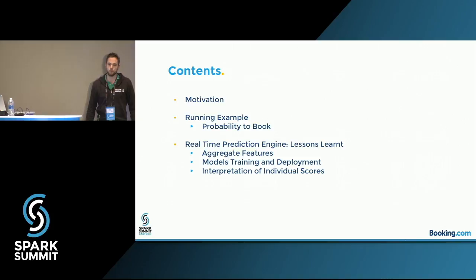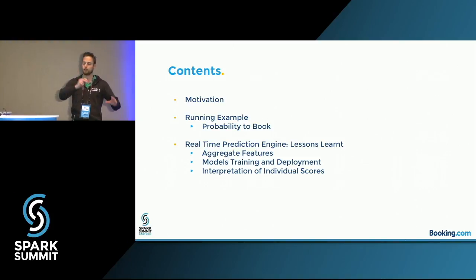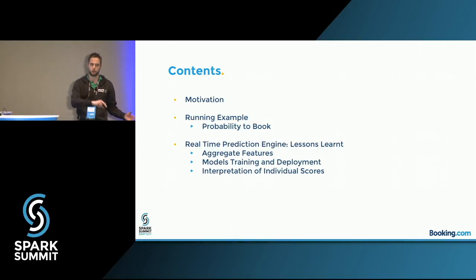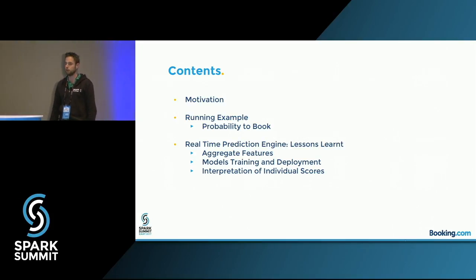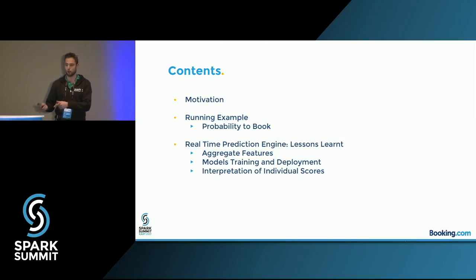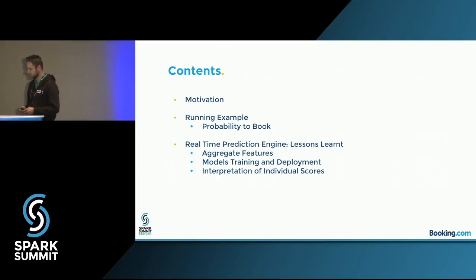What I'll be going through is the motivation — what we do at Booking in security and fraud. But the main reason for this presentation is: you build your awesome model, and then you want to deploy it in real time. That's where I want to share lessons learned. I'm going to propose a running example — the probability to book a room given that you're on a hotel page — and highlight features, how to build aggregate features in real time, model training and deployment, and interpretation of results.